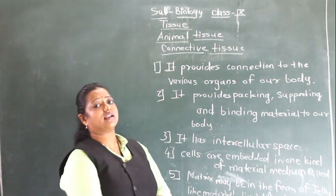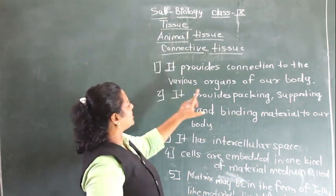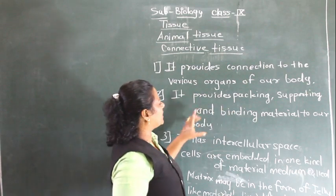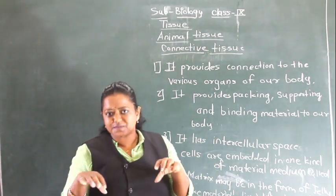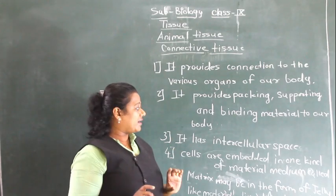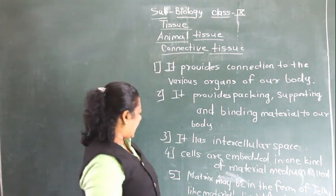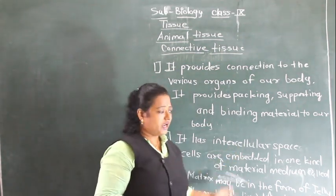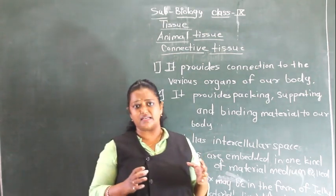These are some general or common properties of all types of connective tissue. First property: it provides connection to the various organs of our body. Second property: it provides packing, supporting, and binding material. Third property: it has intercellular spaces — gaps in between the cells. Fourth property: cells are embedded in a material medium called matrix. This matrix may be in the form of jelly-like material, liquid or fluid, or rigid or solid material.